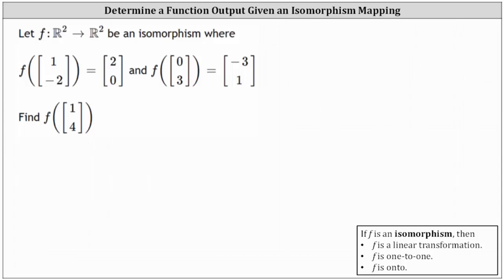Let F be the mapping or transformation from R² to R², and an isomorphism where F of the vector (1, -2) equals the vector (2, 0), and F of the vector (0, 3) equals the vector (-3, 1). We want to find F of the vector (1, 4). Because F is an isomorphism, we know F is a linear transformation, F is one-to-one, and F is onto.